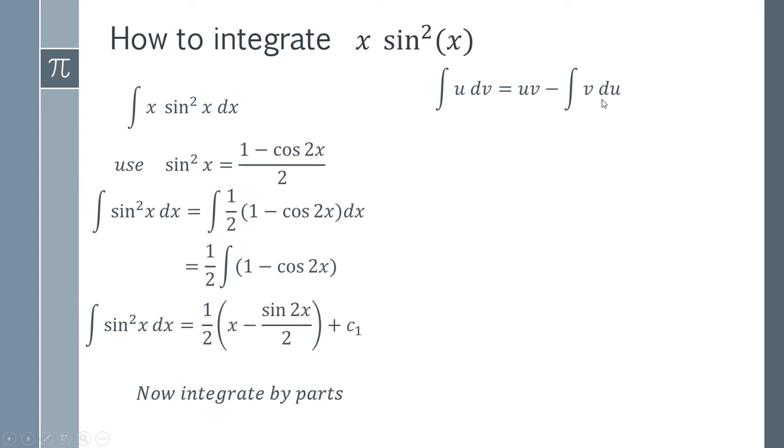So we've got u here and du here. So if this was simply dx, that would be a lot easier. So we're going to choose u to be x and then that will mean that dv is going to be this.